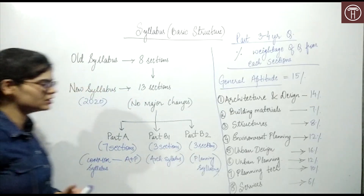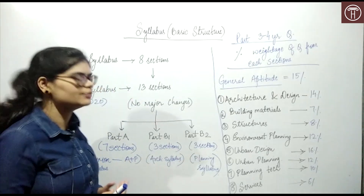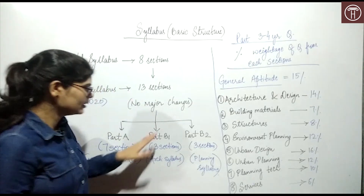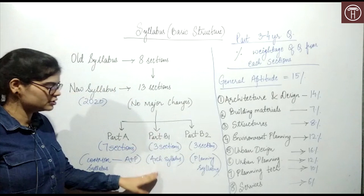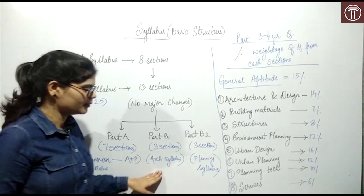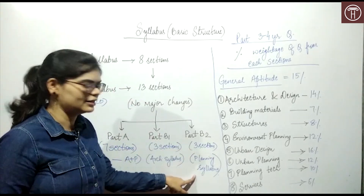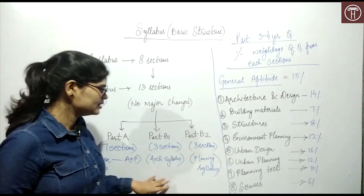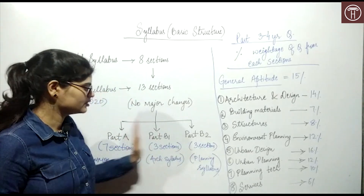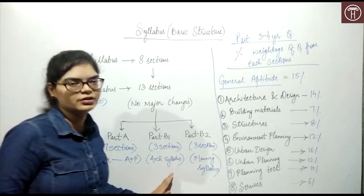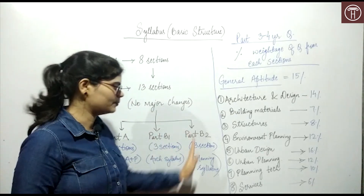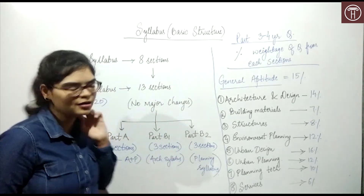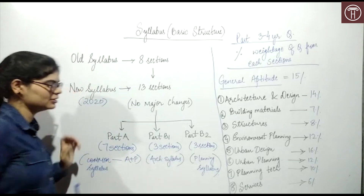A lot of students have confusion that B1 is the architecture part and B2 is the planning part. Only architecture students will attempt B1, and B2 is the planning part. But the planning part is not just B2 — there is a combined paper structure to be aware of.